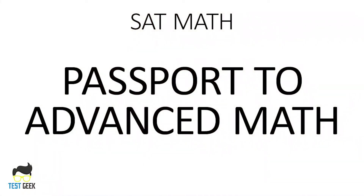The third section is called Passport to Advanced Math. This covers more advanced topics — things you may have learned in Algebra 2 and higher math — skills you would need if you were going into a STEM field. You need to be familiar with complex equations and functions such as quadratic, discriminant problems, and exponential functions. You also need to be able to create and understand simple rational expressions. This is a more advanced version of the Heart of Algebra, with more difficult problems requiring more advanced skills.